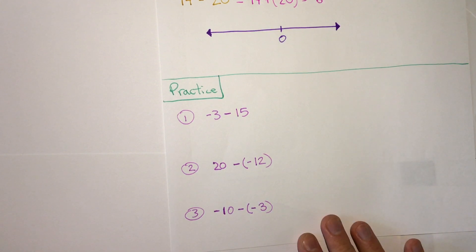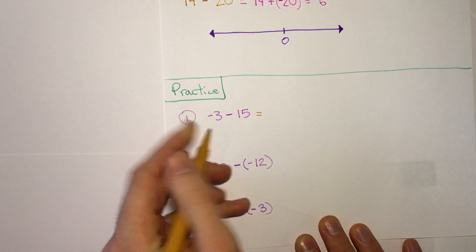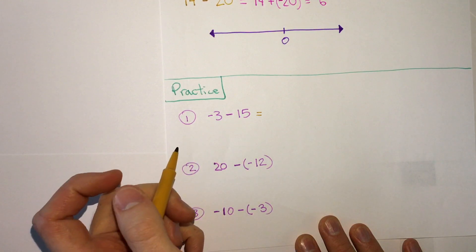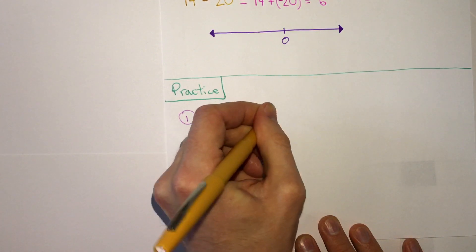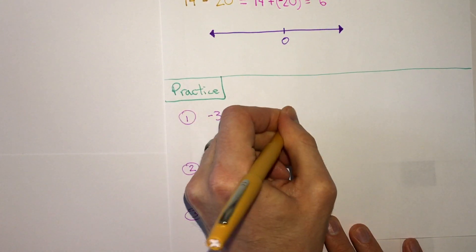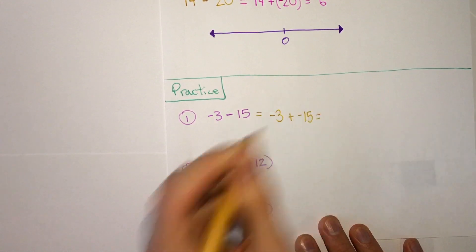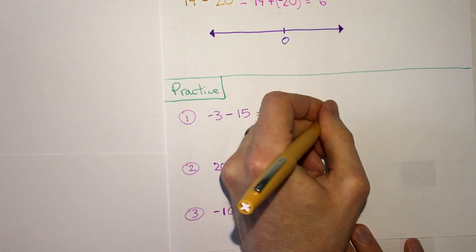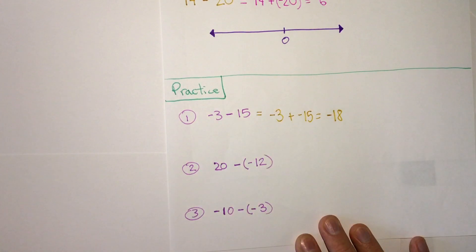Hopefully, none of these gave you too much problems. But we'll check our answers here. If we do the keep, change, change method for each of these. So negative 3 plus negative 15. We add them for a further negative. We get negative 18.